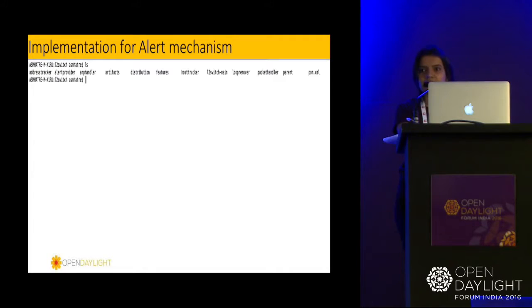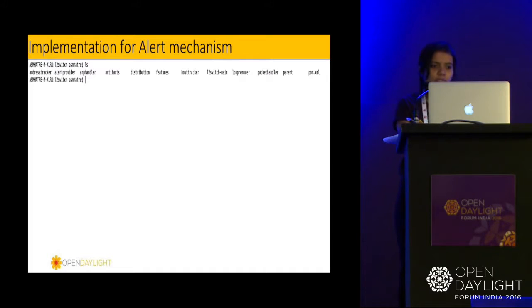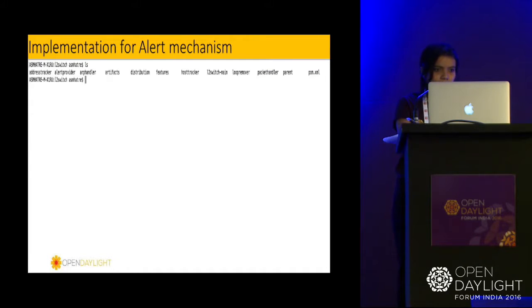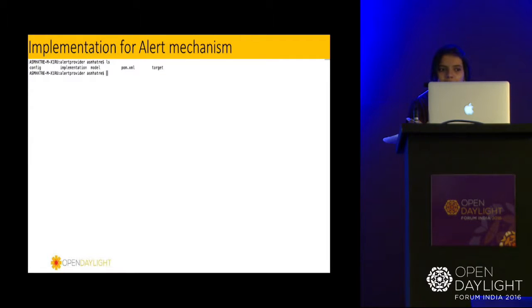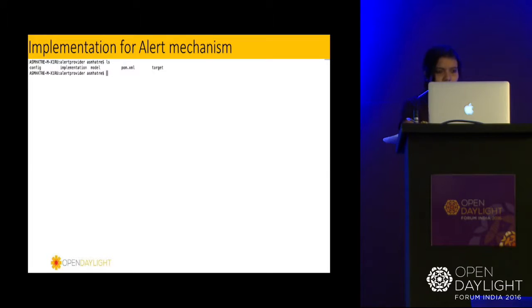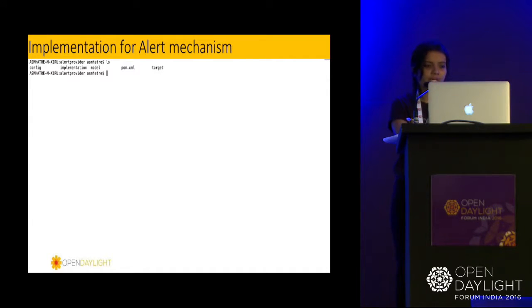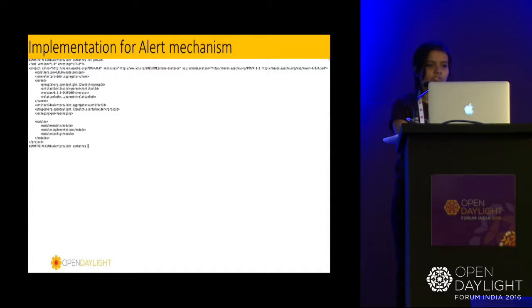Assuming everyone is aware of how to write an application inside MDSAL: for this alert provider, we can create our own application, or we can add the feature inside the L2 switch. Here I'm adding the feature inside the L2 switch. You can see the existing features in the L2 switch, and I'm adding alert provider as a new feature. You can see the directory structure of the alert provider — we have a model, implementation, and config. This is the feature YAML file defining the modules, and it will be a part of L2 switch, pointing to the parent POM of the L2 switch.